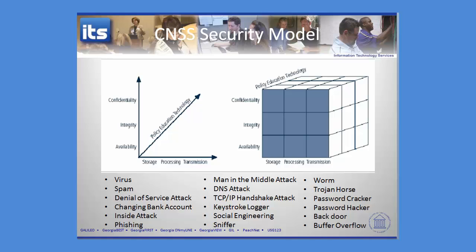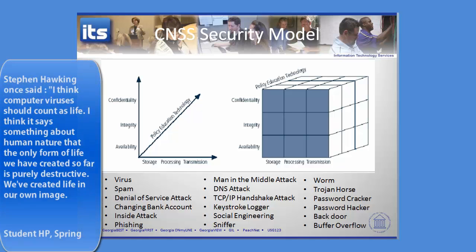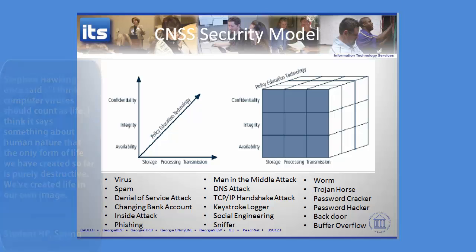The first one's a virus — that's where you've written a program, stored that program, or somehow introduced that program onto the computer, and then that virus can do all sorts of very nasty stuff. It can attack the confidentiality, integrity, or availability of particular resources.